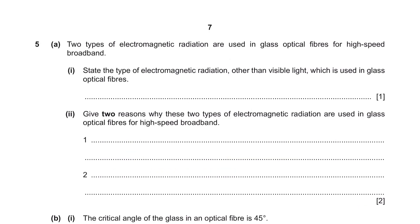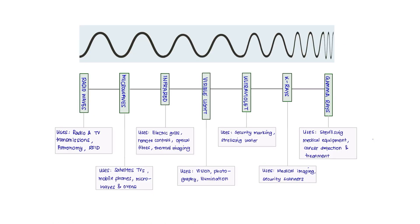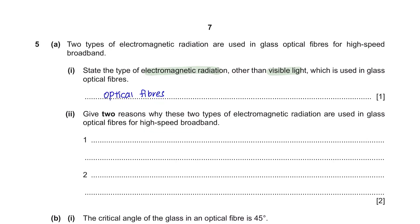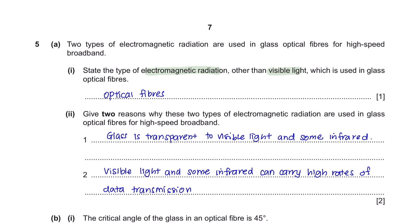Question 5. Two types of electromagnetic radiation are used in glass optical fibers for high-speed broadband. Part 1. State the type of electromagnetic radiation other than visible light which is used in glass optical fibers. Referring to the notes that I have prepared, you will see that infrared is used in optical fibers. Part 2. Give two reasons why these two types of electromagnetic radiation are used in glass optical fibers for high-speed broadband. Unfortunately, this is not some kind of calculation questions where you can just put in the values and obtain your answer. You need to have a strong foundation and knowledge in Chapter 3 waves in order to answer this question. One of the two reasons is that glass is transparent to visible light and some infrared. And the second reason is visible light and some infrared can carry high rates of data transmission.